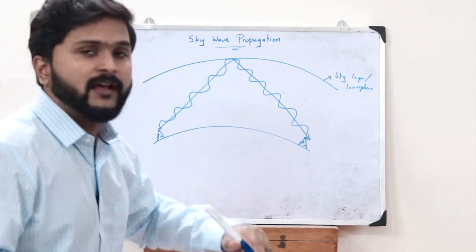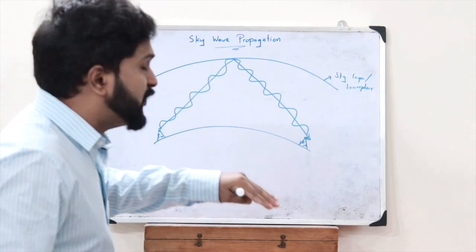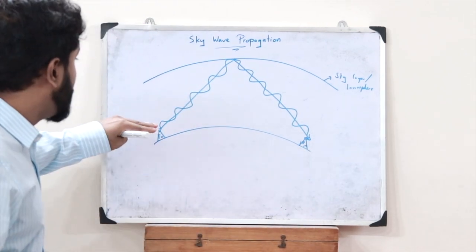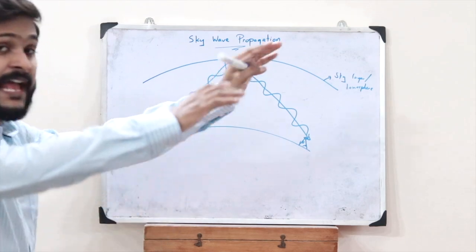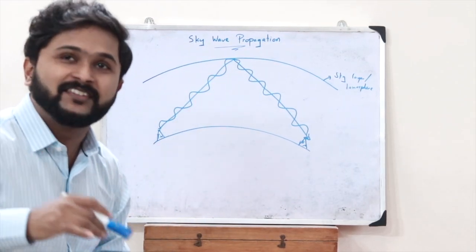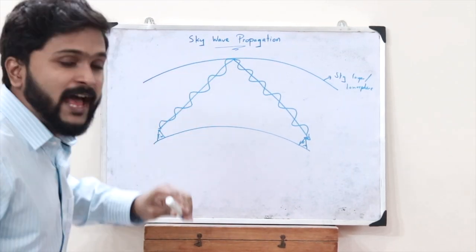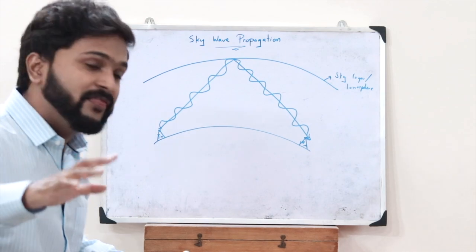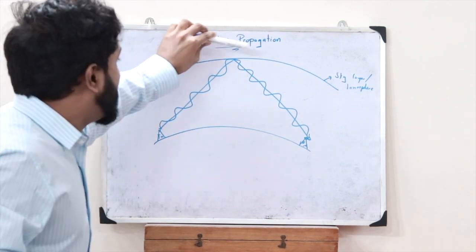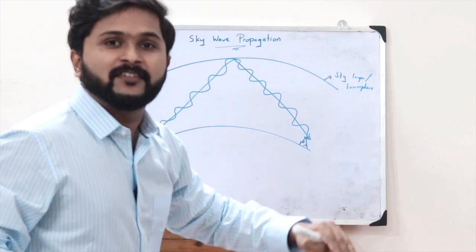If the frequency of the signal generated by the transmitter is greater than 30 megahertz, reflection does not happen. Instead, the signal will penetrate the ionosphere and go into space.